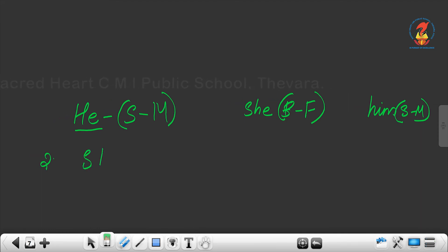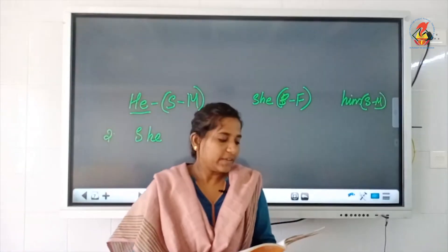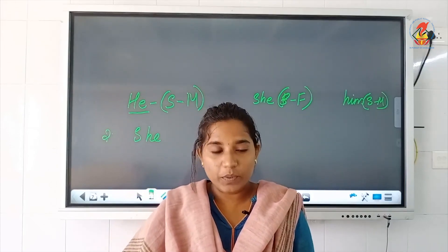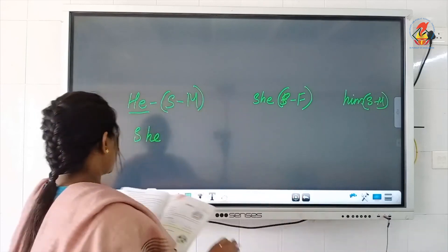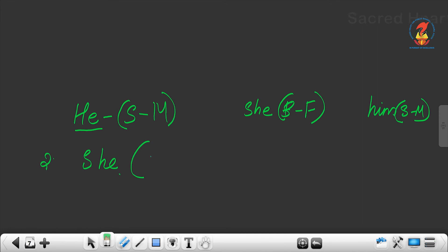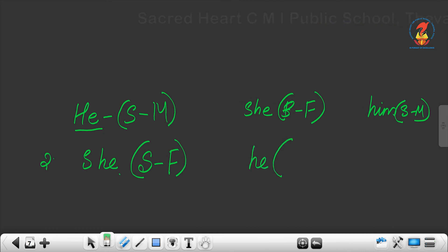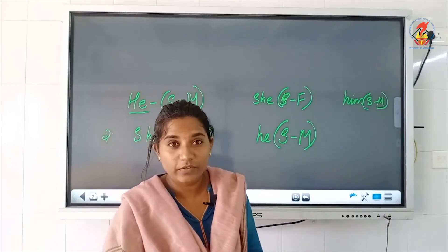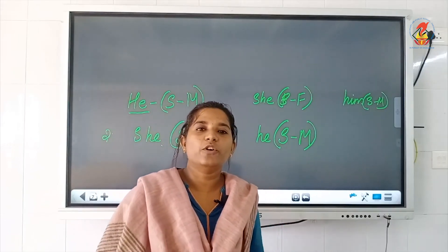Second one: she is such a nice person that he wants to be her friend. 'She' is singular and female — S, F. 'He' is singular and male — S, M. Similarly, you have to do the rest of the exercises and complete them before the next class.